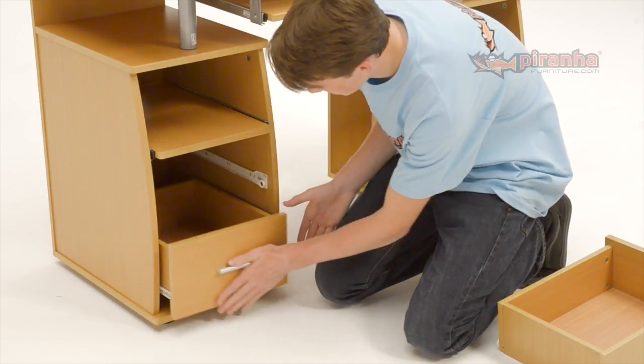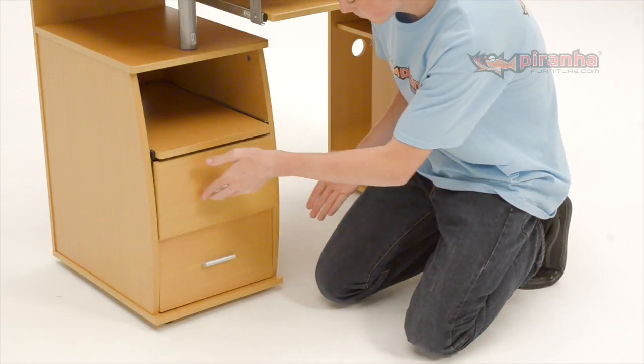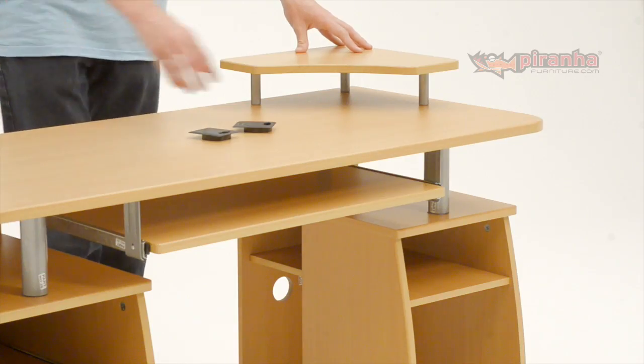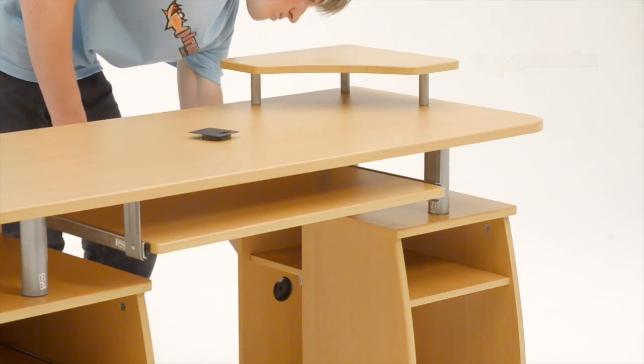Step 25. Fit the drawers by tipping them up slightly and sliding them carefully onto the runners fitted to the sides of the drawer unit. Finally, push fit the supplied plastic cable tidies in the pre-cut holes at the back of the desk.